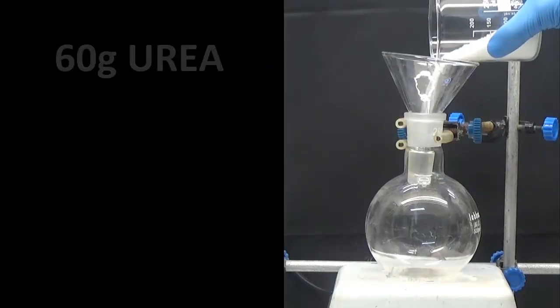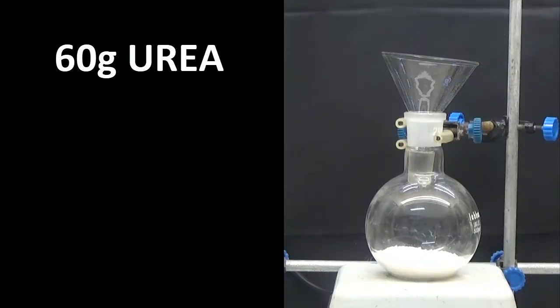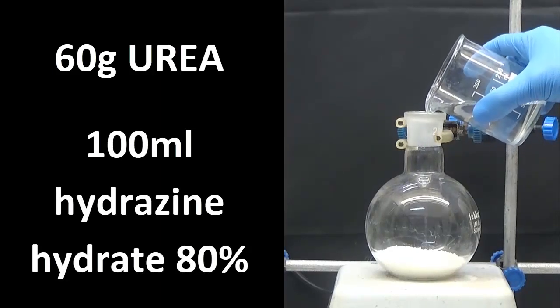To obtain the semicarbazide we will put in a 500 milliliter flask 60 grams of urea and 100 milliliters of hydrazine hydrate at 80 percent.